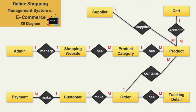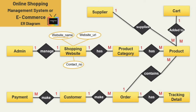Now let's look at the attributes. For the entity shopping website, we have three attributes: website name, website URL, and contact number. Here website name is the key attribute, though you can also make website URL the key attribute. Next is the admin entity — for this I'm also taking three attributes: admin ID, admin name, and role. Admin ID is the key attribute.